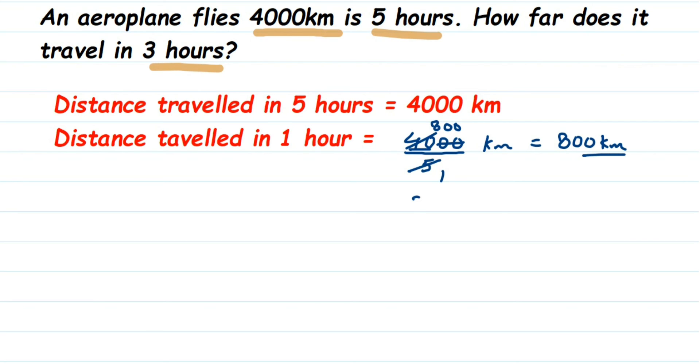For 3 hours we have to add 800 three times: 800 plus 800 plus 800. Instead of adding it, which is time consuming, we are going to multiply 3 into 800. Therefore we got the answer here.